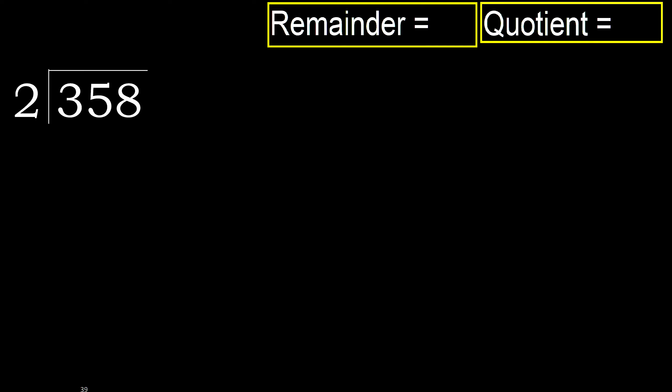358 divided by 2. 3 is not enough. Let's therefore start with 3. 2 multiplied by which number is nearest? 2... 3. But not greater.